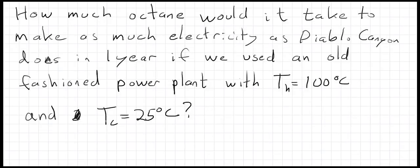In this example we're going to look at power plant efficiency or heat engine efficiency. To get a flavor of how much energy we're talking about, we're gonna compare it to Diablo Canyon since that's a local generator of electricity.